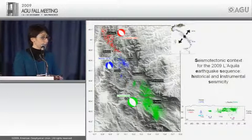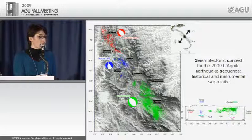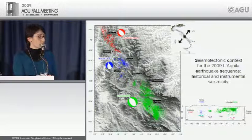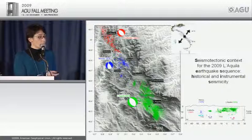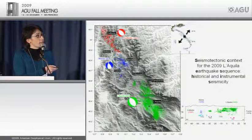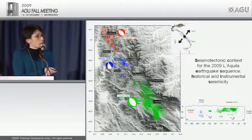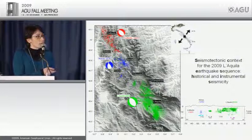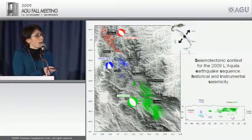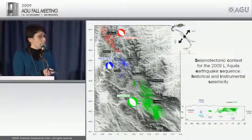The epicentral area in the central Apennines is characterized by northeast-trending extension. In map view, from north to south, we see the instrumental seismicity of the 1997 Colfiorito sequence, the 1979 Norcia sequence, and in green the aftershock sequence of the L'Aquila earthquake. The two major historical events closer to the epicentral area occurred in 1461 and 1703.